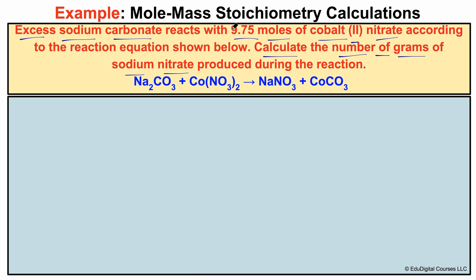What makes this a mole-mass stoichiometry problem is that the starting quantity is expressed in moles — 9.75 moles of cobalt-2 nitrate — and what we're trying to find is the number of grams of sodium nitrate. The known quantity is in moles, the unknown is in grams, which is mass — so this is a mole-mass stoichiometry problem.